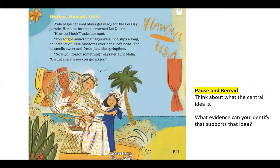All right, and we're back. Let's read page 141. We are now moving to Wailea, Hawaii, back in the United States of America. Alla helps her aunt Malia get ready for the Lei Day Parade. Her aunt has been crowned Lei Queen. 'How do I look?' asks her aunt. 'You forgot something,' says Alla. She slips a long, delicate lei of alima blossoms over her aunt's head. The lei smells sweet and fresh, just like springtime. You can see that around her neck — that long lei. That's a necklace of flowers.